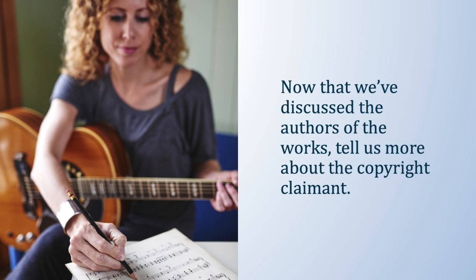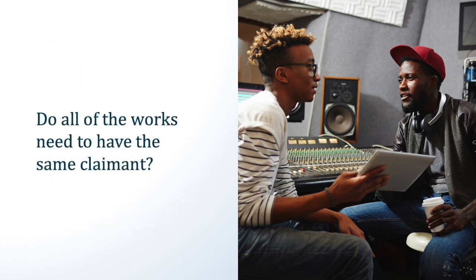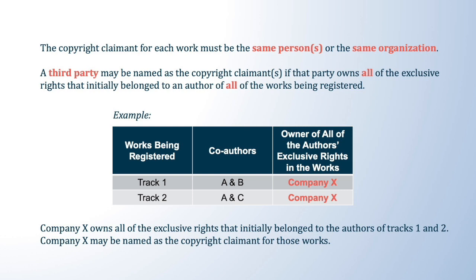The copyright claimant may be either the author or co-authors of all of the works being registered, or the claimant may be the party that owns all of the exclusive rights that initially belong to an author of all of the works being registered. The copyright claimant for each work listed in the application must be the same person or organization. For example, if you plan to name a third party as a claimant, such as a music publisher or a record label, that party must own all of the exclusive rights that initially belong to an author of all of the works being registered. You should only list the works that are owned by that party.